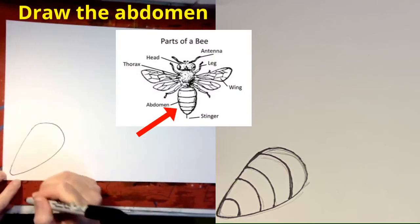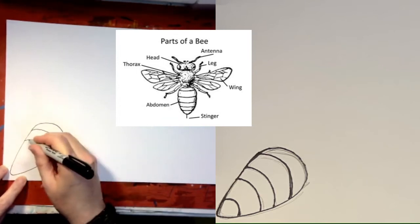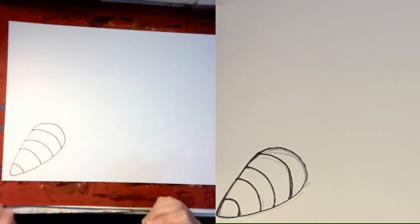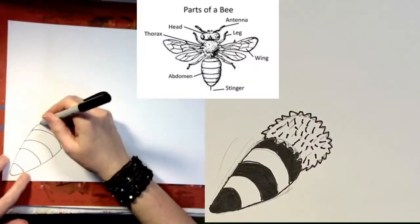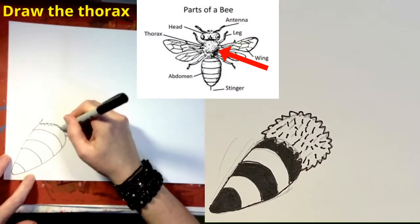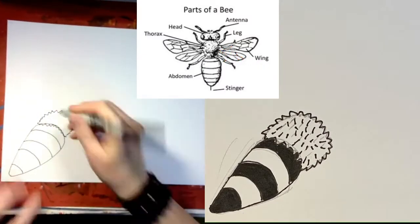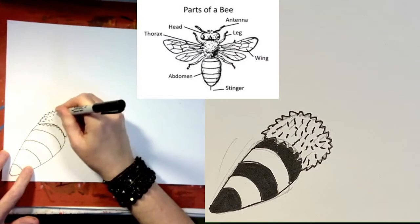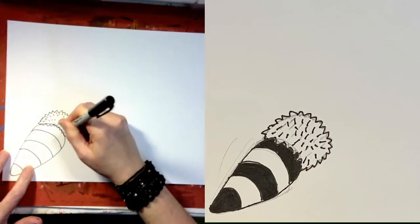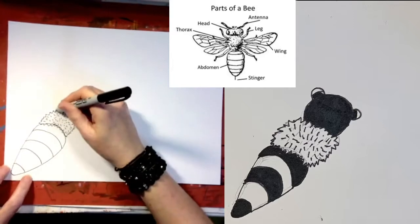Start by drawing the abdomen. Notice that I'm drawing my stripes curved — this will help make your bee look 3D. You may also want to draw the stinger. Now draw the thorax. This shape is kind of round but the lines are very angular. The thorax has a lot of furry texture, so draw short lines to show that texture.